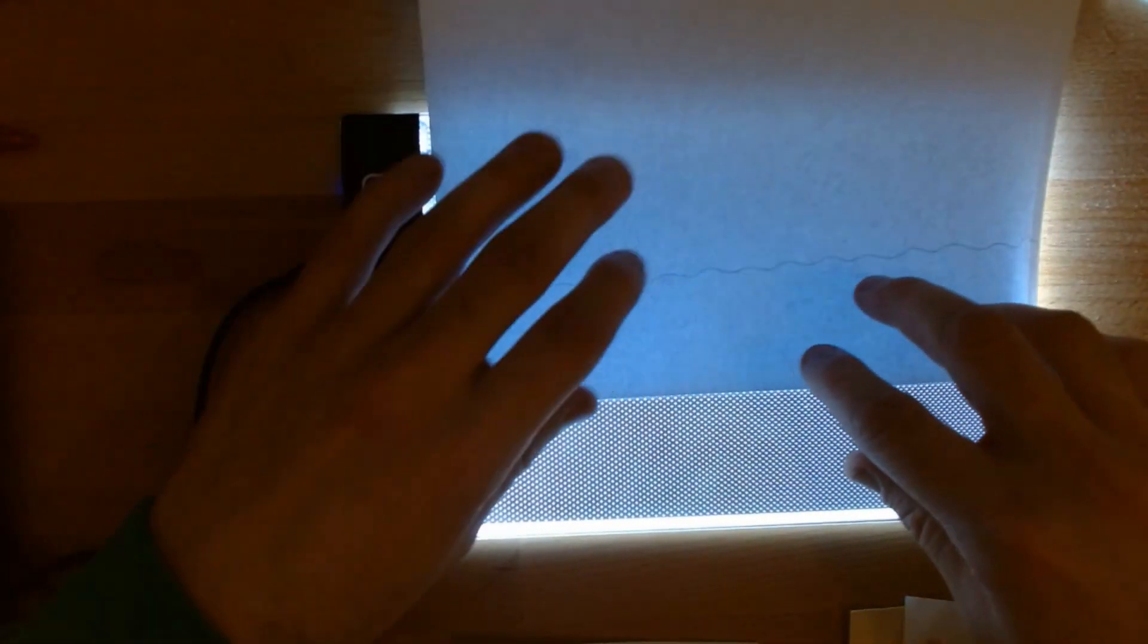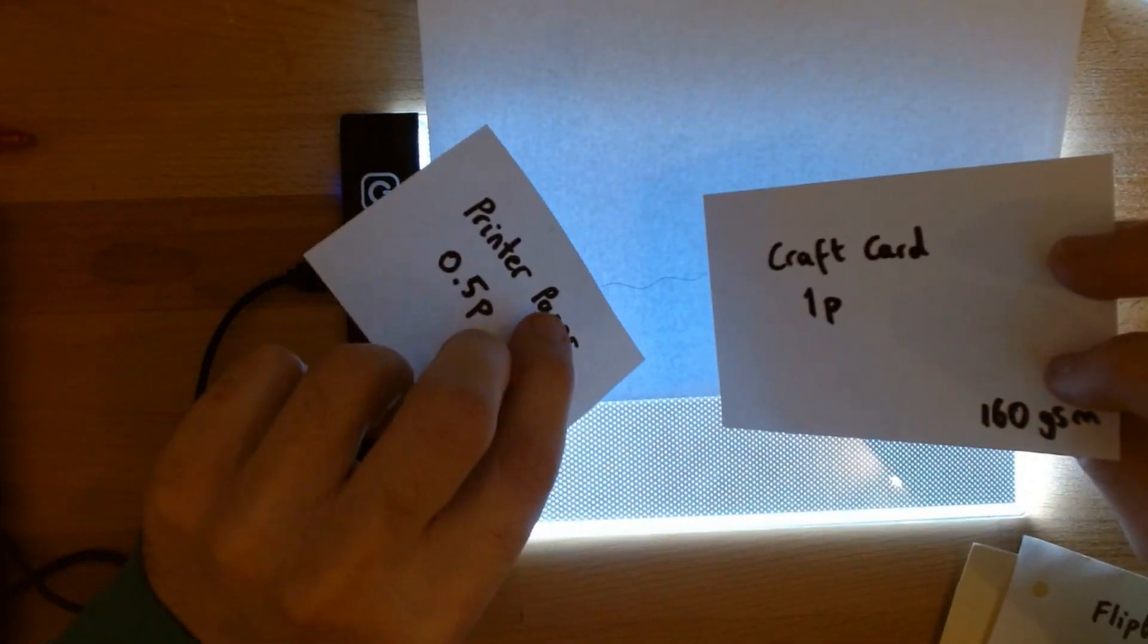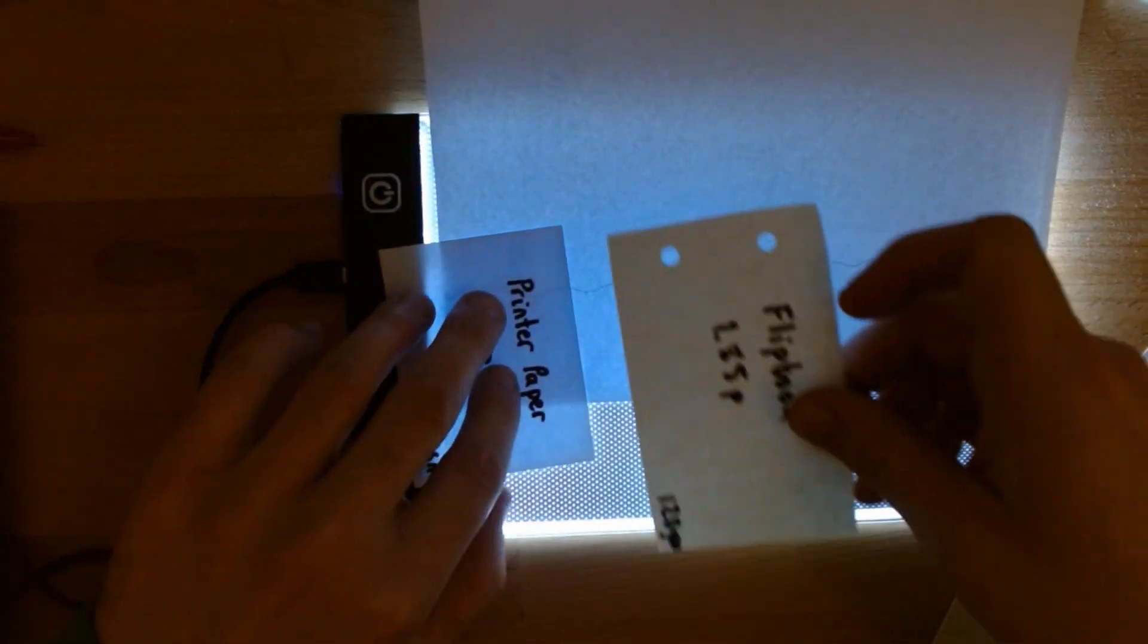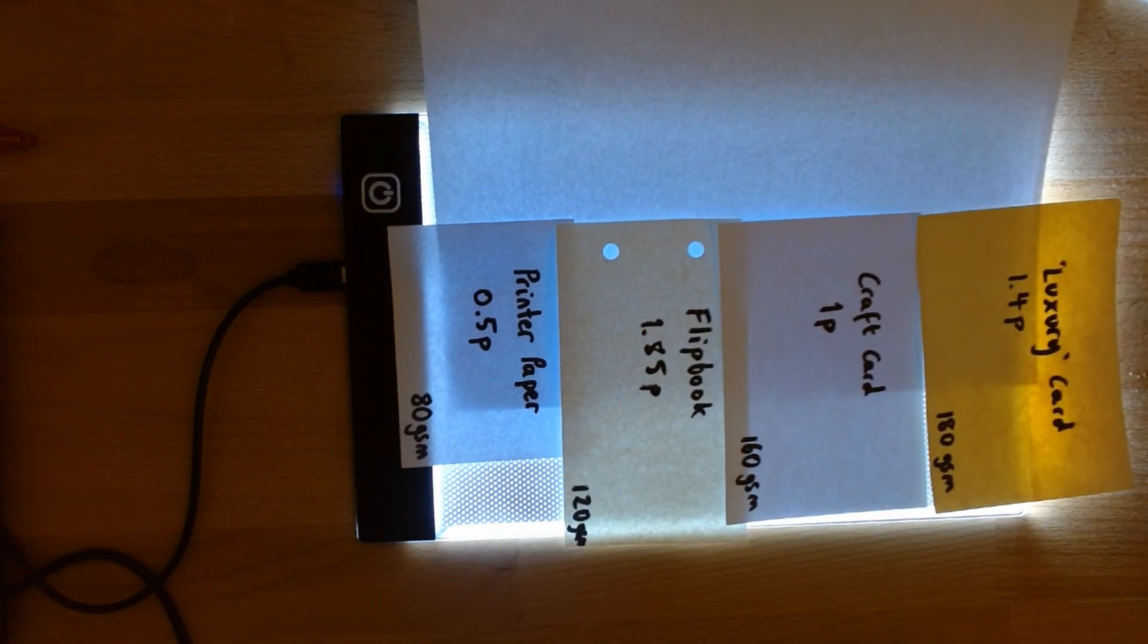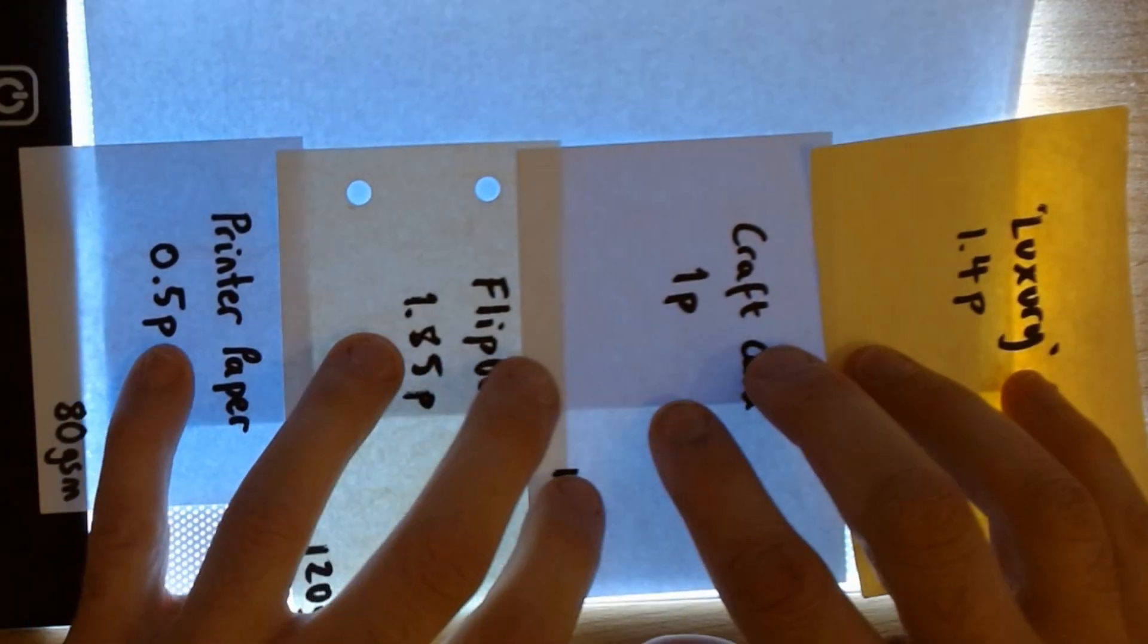So final test, we're going to see how good they are to trace on. So I'm going to line up the paper in terms of thickness. So we start with the 80 gsm, and we work our way along to the 180 gsm. Now if I press down,